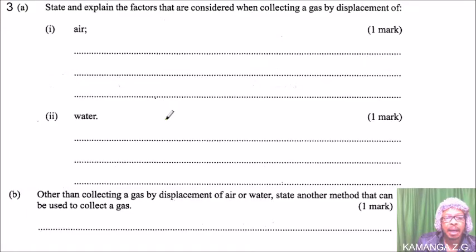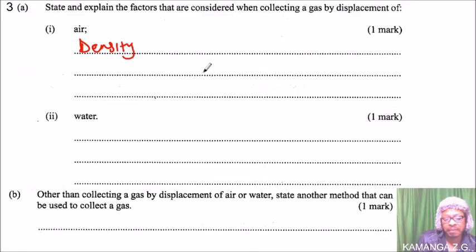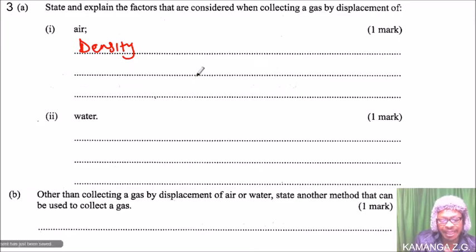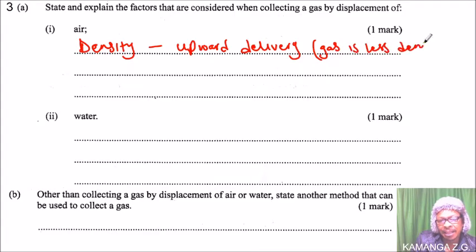This is question number three, part A. We are told to explain the factors considered when collecting a gas by displacement of air. The first factor considered is density — the density of the gas. When the gas to be collected is less dense than air, then we use what we call upward delivery. So in this case, the gas is less dense than air.